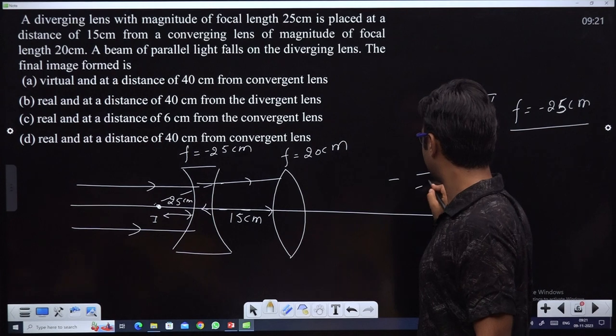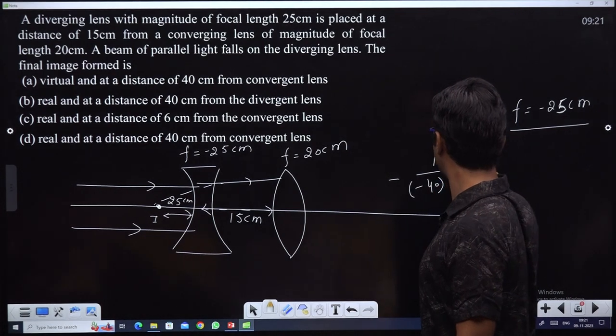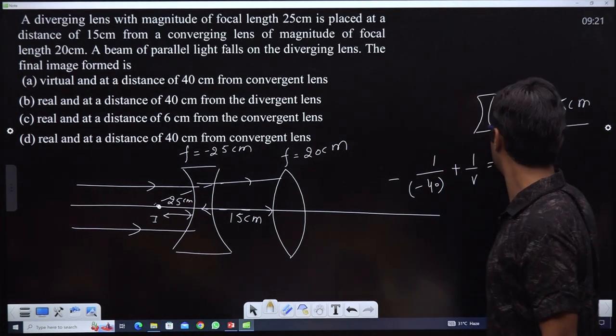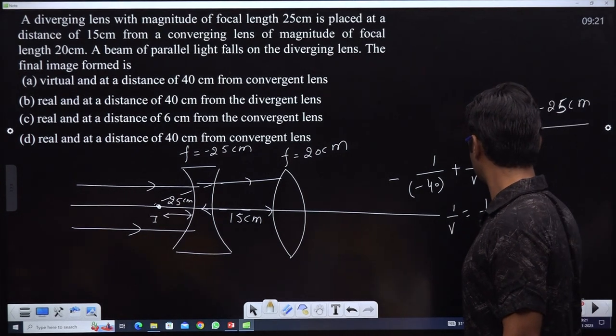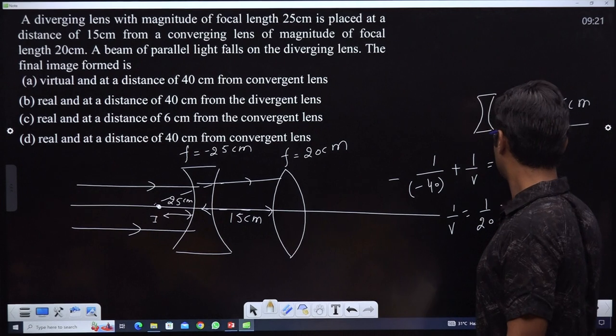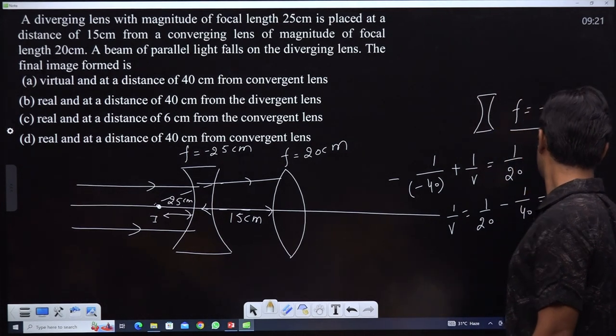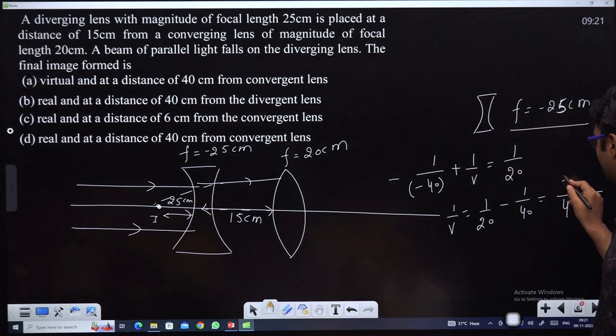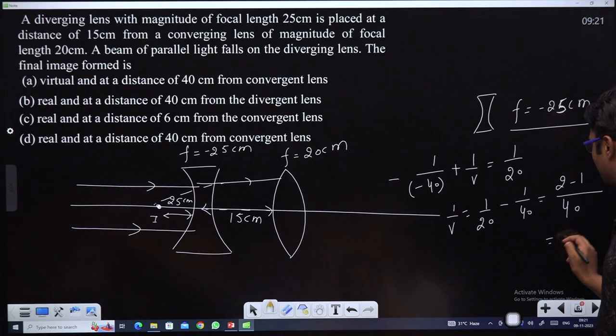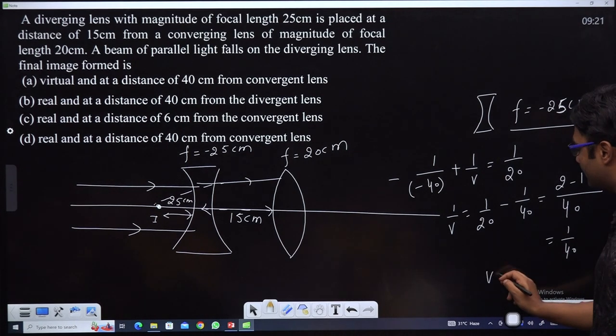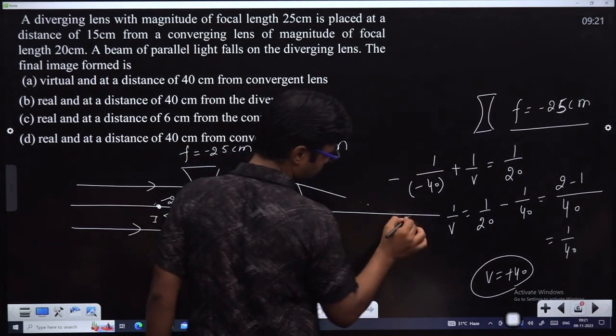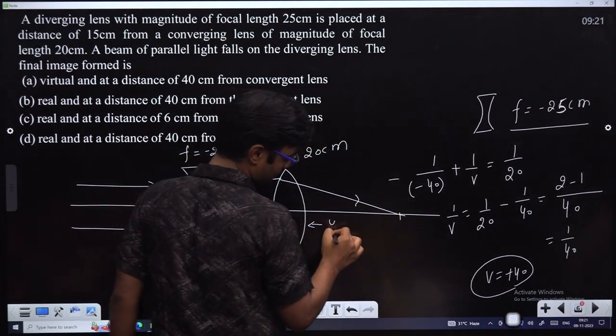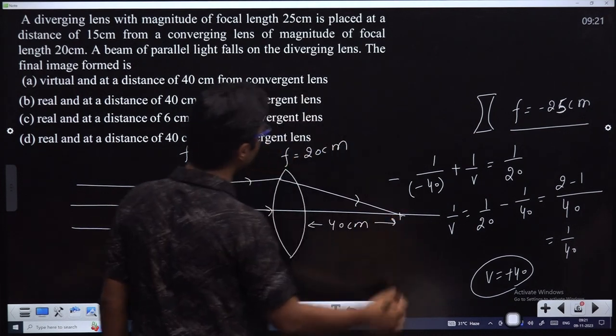So minus 1 by minus 40 plus 1 by V equals 1 by 20. 1 by V equals 1 by 20 minus 1 by 40. This gives 1 by V equals 1 by 40. Therefore V equals plus 40cm.